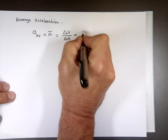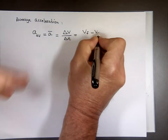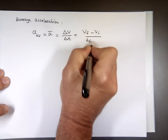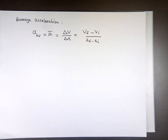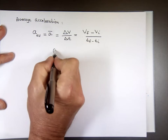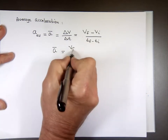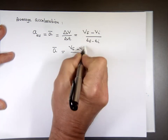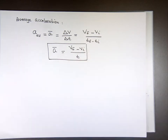So it's final velocity minus initial velocity — V-final minus V-initial — divided by T-final minus T-initial. Since your initial time is zero, I always write average acceleration equals V-final minus V-initial divided by time — the change in velocity divided by time.